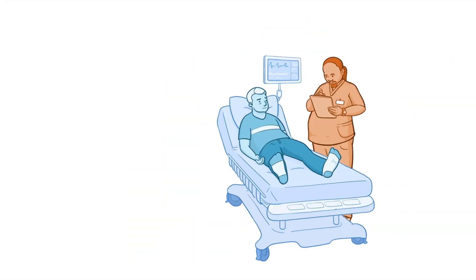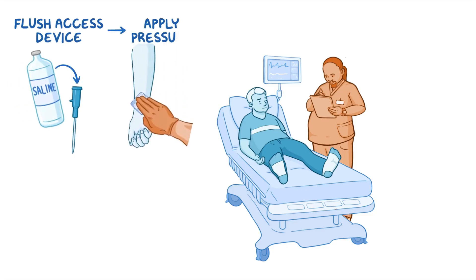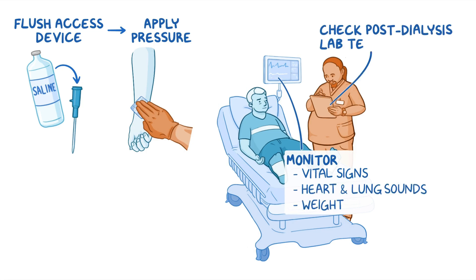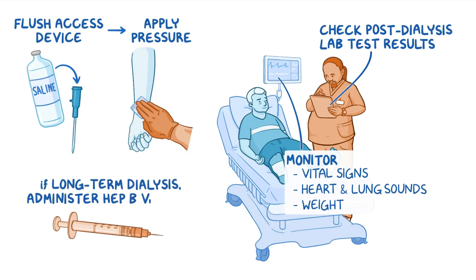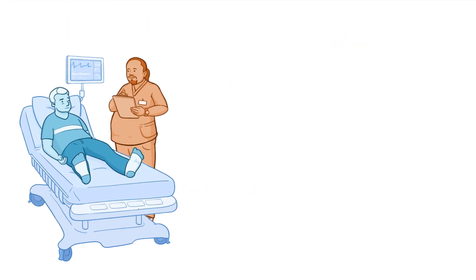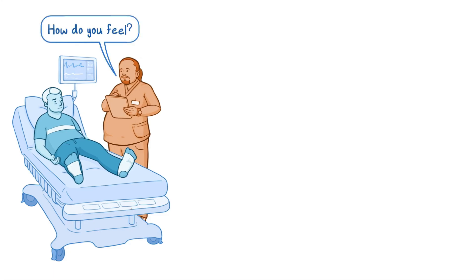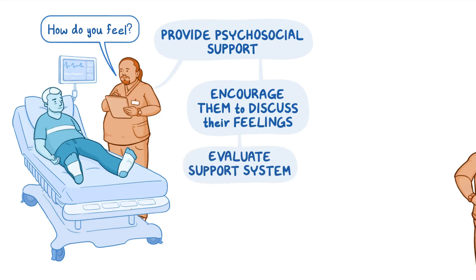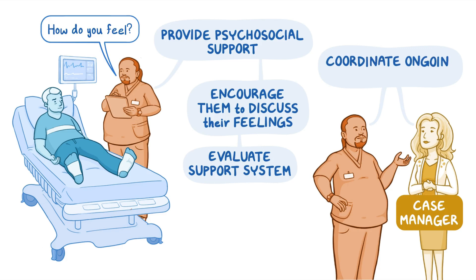After hemodialysis is complete, flush the access device and apply pressure to prevent bleeding. Continue monitoring the client's vital signs, heart and lung sounds, and weight, and check their post-dialysis laboratory test results. If your client requires long-term dialysis, be sure to administer the hepatitis B vaccine to prevent hepatitis. Take time to talk to them about their feelings and provide psychosocial support, evaluate their support system, and work with the case manager to coordinate their ongoing care needs.